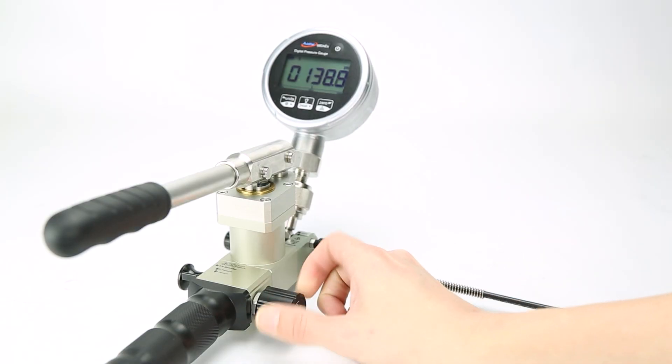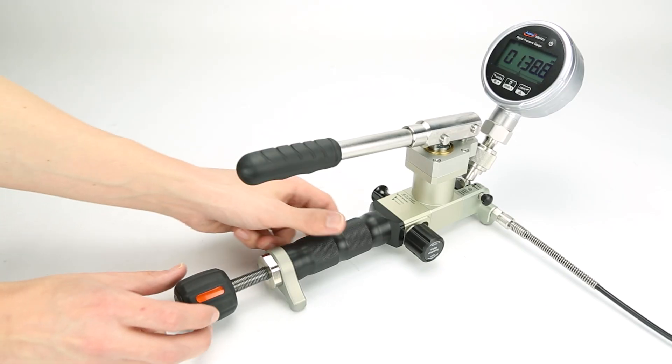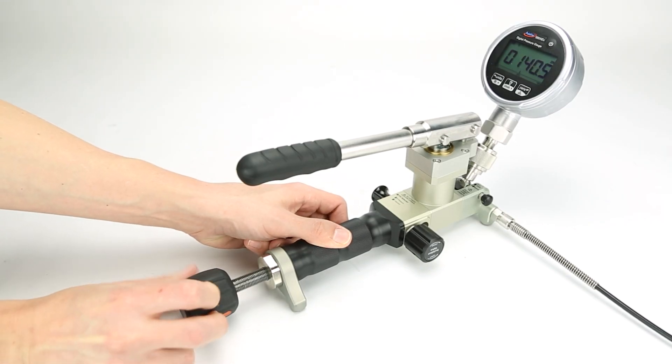After nearing the desired pressure, close the isolation valve, then use the fine adjust knob to dial in the correct set point according to the reference device.